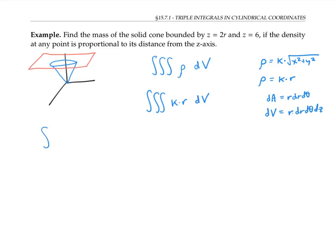So we want to integrate k times r times r dr dθ dz. And finally, we need to put together our bounds of integration.